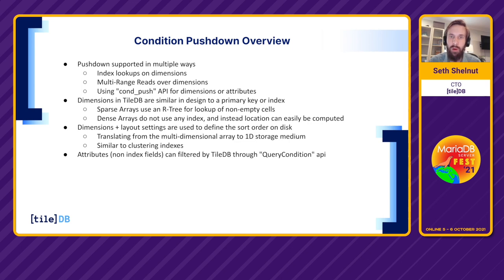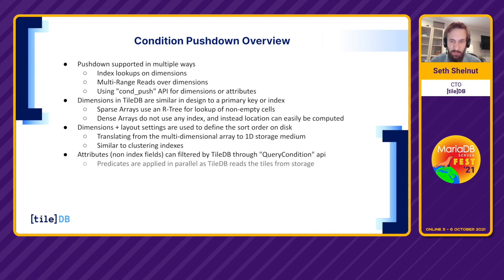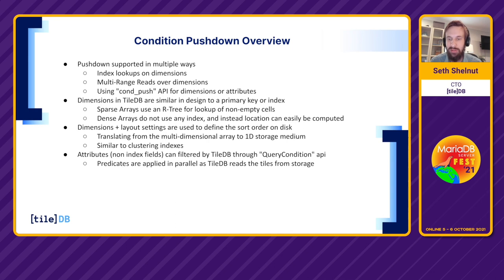Attributes are fields that are not indexed. They're stored as separate files in our columnar format and are part of the tuple of an individual cell. We do offer filtering on these non-indexed fields through what we call the query condition API. The most important thing is that predicates — even for attributes — can be applied completely in parallel, giving massive performance capabilities through the parallelization as we read tiles from storage.